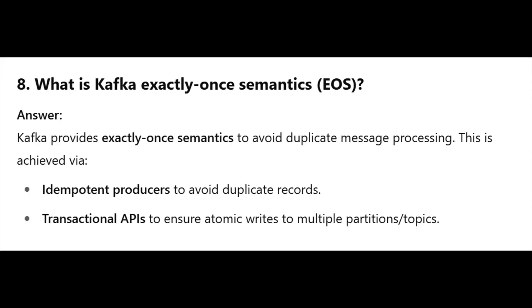Question 8: What is Kafka exactly-once semantics (EOS)? Answer: Kafka provides exactly-once semantics to avoid duplicate message processing. This is achieved via idempotent producers to avoid duplicate records, and transactional APIs to ensure atomic writes to multiple partitions/topics.